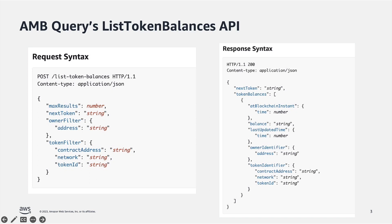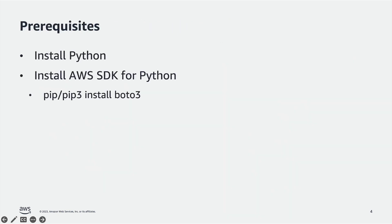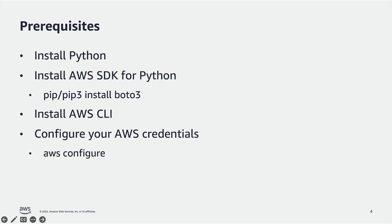But before we do that, I want to quickly go over the prerequisites so that you can follow along as well. To start off with, you need to install Python. You need to install the AWS SDK for Python, which is Boto3. You will also have to install the AWS Command Line Interface, or CLI. And lastly, you'll also have to configure your AWS credentials correctly.